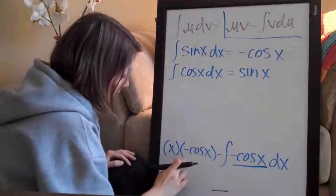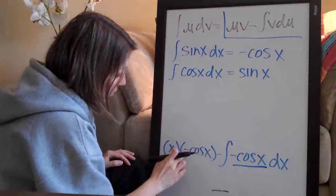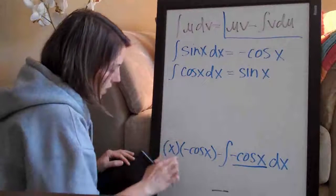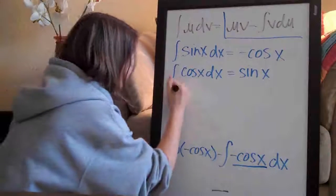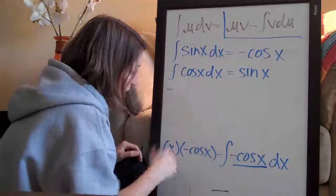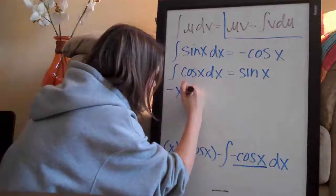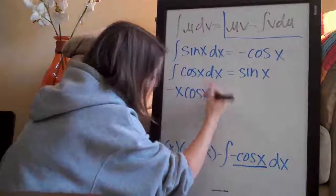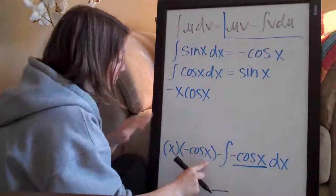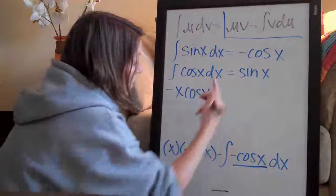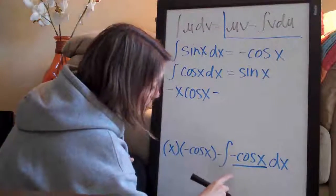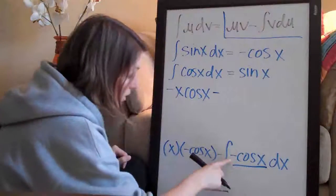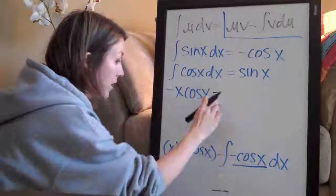This term out in front here is we need to bring the negative sign out to the front. You never want to have a negative sign in the middle of your term here. So, this is going to simplify to negative and then this x stays out in front. Negative x cosine of x. This term is now good to go. That's as simple as we're going to get.